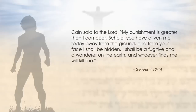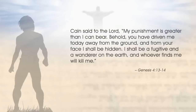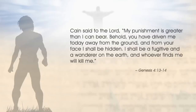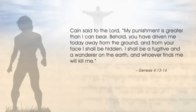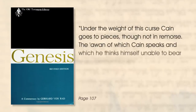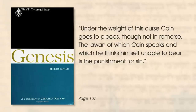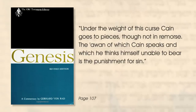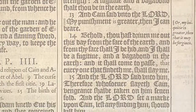Cain still does not show regret or remorse in his next response to God. His response is all about him and not how his sin has damaged his family or relationship with God. There is not even an inclination of asking for forgiveness. Instead, he complains that his punishment is too harsh. Gerhard von Rad says, 'Under the weight of this curse, Cain goes to pieces, though not in remorse. The one of which Cain speaks, which he thinks himself unable to bear, is the punishment for sin.' However, the passage still highlights the grace God offers in spite of Cain's self-centeredness.